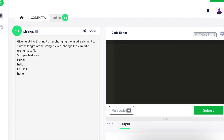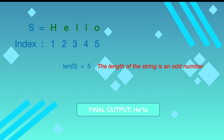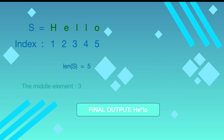In the 7th question, we get an input string and print it with the middle element replaced by an asterisk symbol. If the length of the string is even, we change both middle elements to asterisks; if the length is odd, we replace the single middle element with one asterisk.